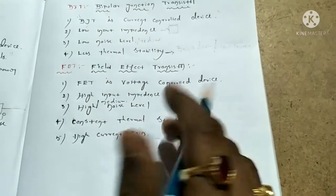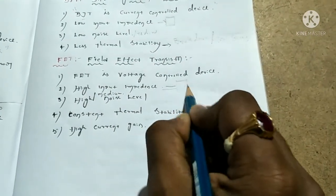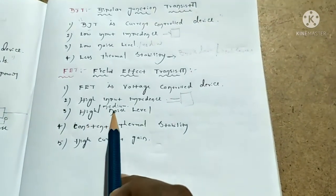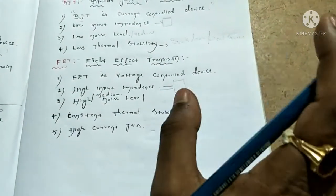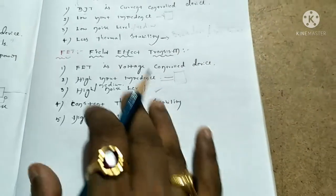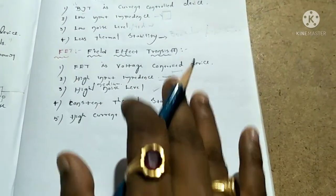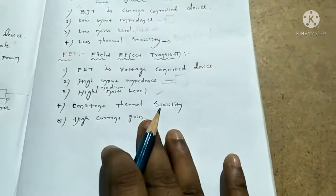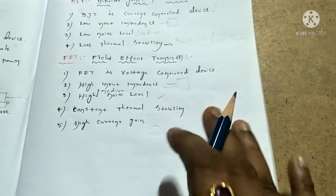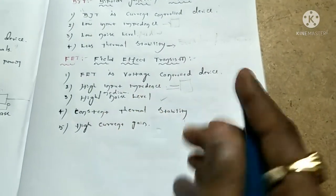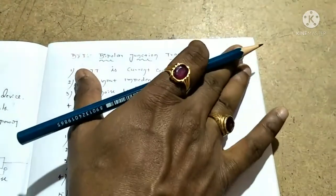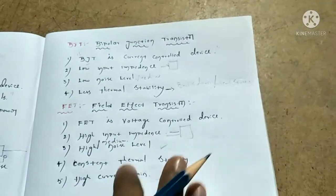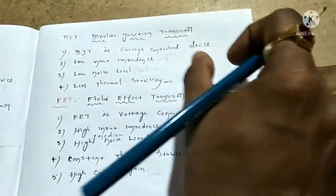FET is a Voltage Control Device. FET has high input impedance. The noise level of FET is medium — it does not produce maximum noise or sound pollution. FET has very good constant thermal stability — meaning it stays stable under breakdowns and heat stresses. FET also has high current gain.